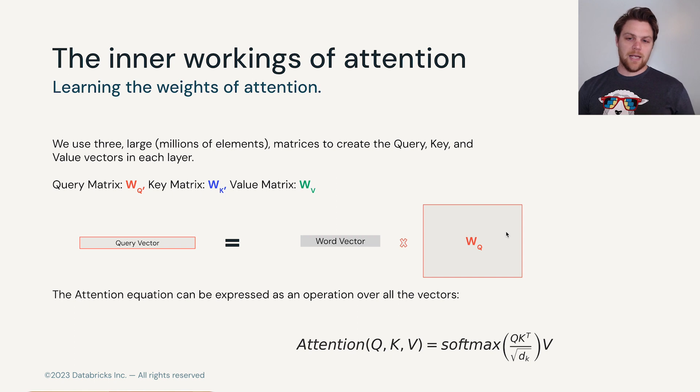We're going to use a matrix multiplication with the word vector, or the enriched embedding vector if you like, multiplied by this query matrix to give us our query vector. All of the matrices, the query matrix, the key matrix, and the value matrix are comprised of weights that are learned during backpropagation.